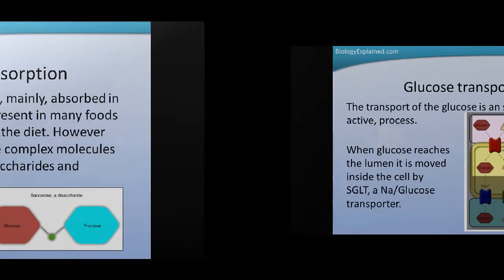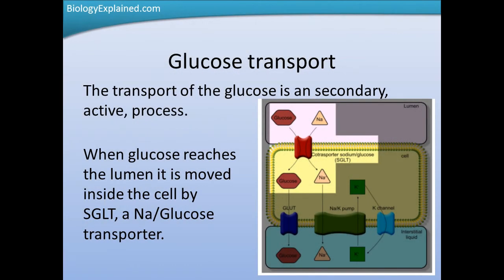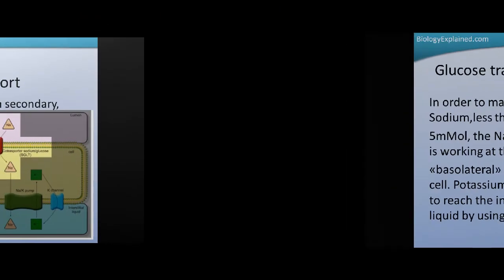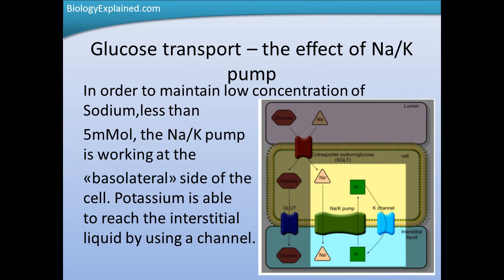The transport of glucose is a secondary active process. When glucose reaches the lumen, it is moved inside the cell by SGLT, a sodium-glucose transporter. The energy is taken from the chemical gradient created by a Na/K pump. In order to maintain low concentration of sodium, less than 5 mM, the Na/K pump is working at the basolateral side of the cell.